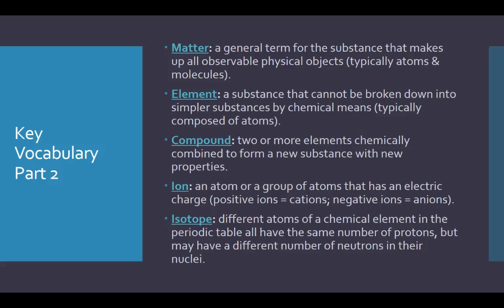An ion is an atom or a group of atoms that has an electrical charge. Cations are positive ions, anions are negative ions — these have gained or lost electrons to become in that state. And then from last class, isotope: something that has an extra or fewer neutrons than the number you were originally looking at.